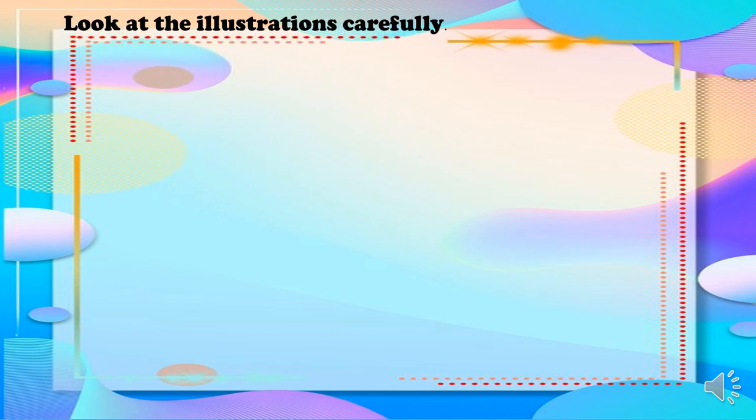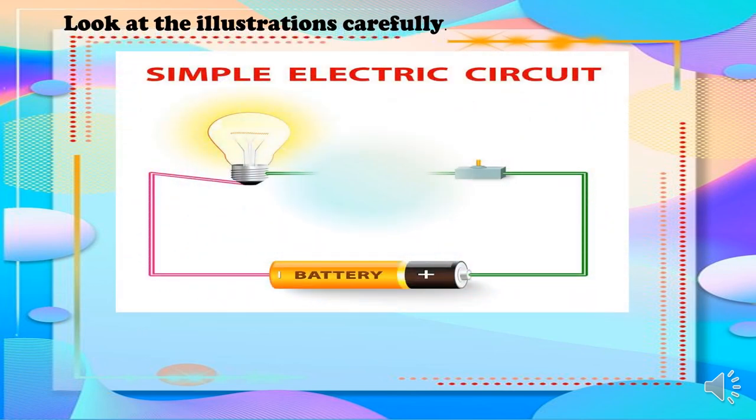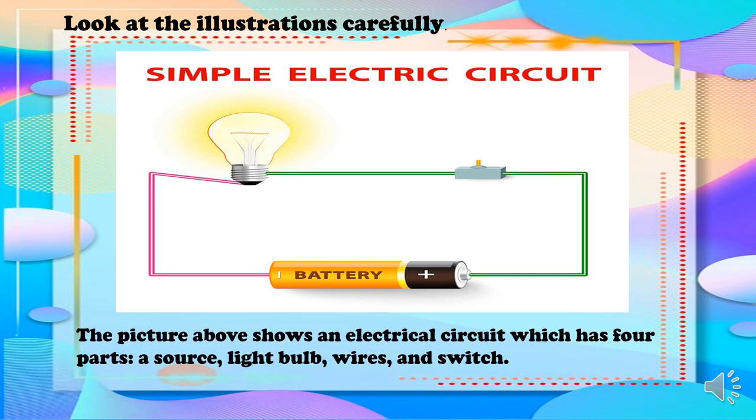Look at the illustrations carefully. This is an example of a simple electric circuit. The picture above shows an electric circuit which has four parts.